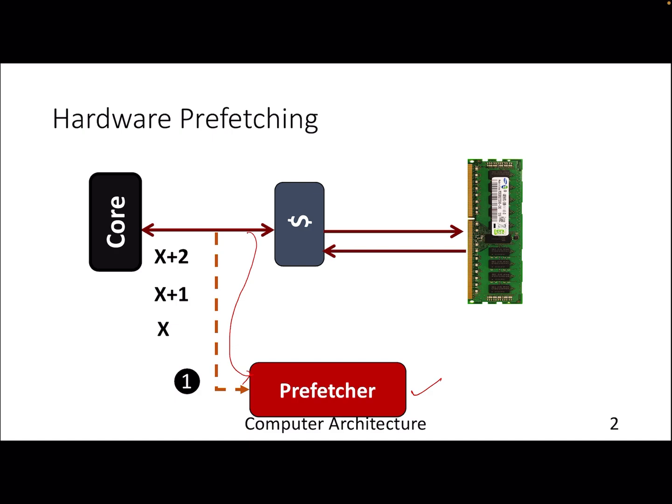The prefetcher will speculate that in future the processor will demand x+3. It will first check in the cache if it's already there, then there's no need to prefetch. But if not there, the request will go to DRAM. DRAM will respond with the data for address x+3. The ultimate goal is by the time the processor demands the data at address x+3, it will be there in the cache so we will get a hit. Essentially we are converting misses into hits with the help of hardware prefetching.